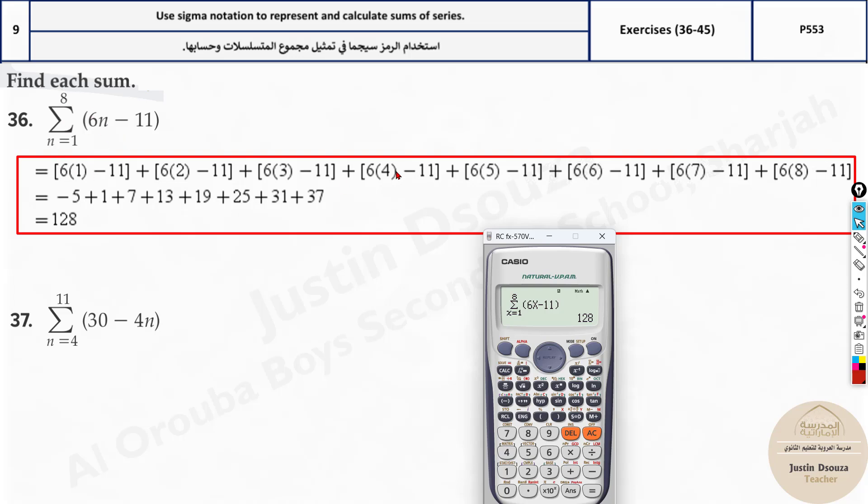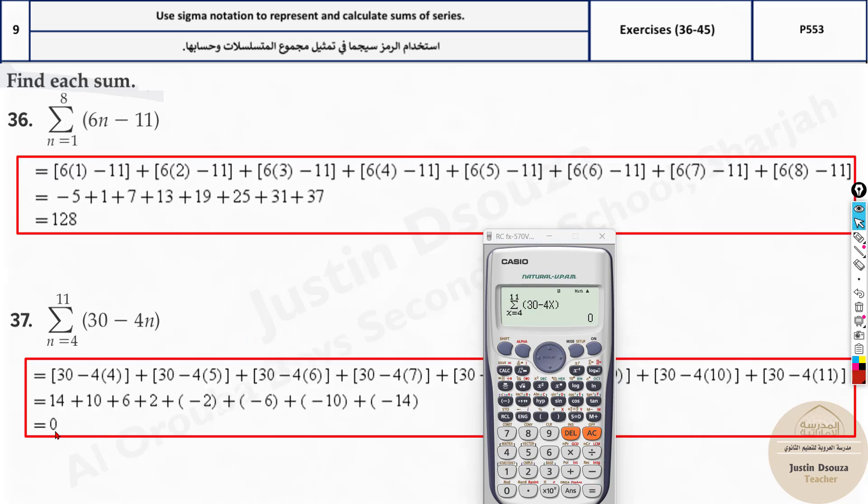You can do it by finding 8 values and adding it up, or this is the easier method. Let's do it again: shift, this log symbol over here, and 30. Type 30 minus 4, instead of n you put alpha x, and then x starts from 4 and ends at 11. The answer is 0.